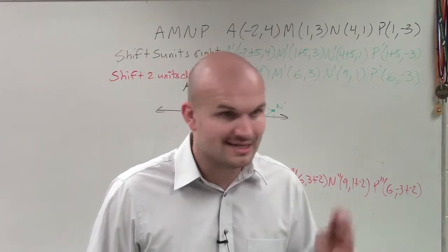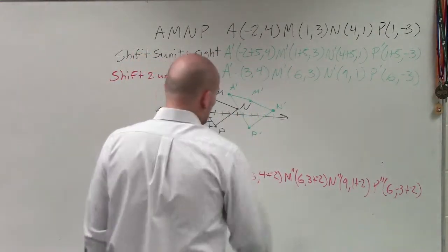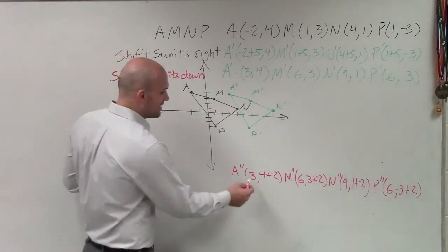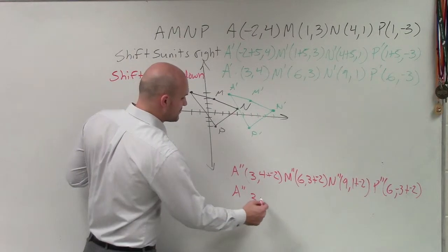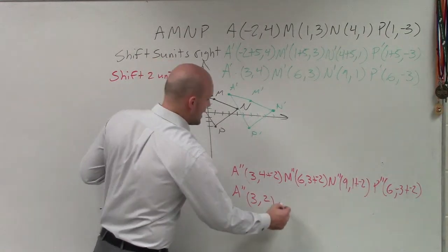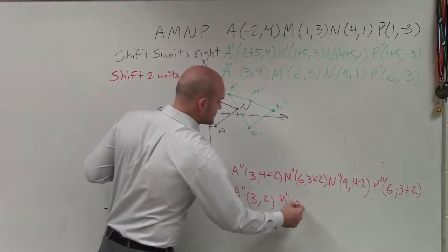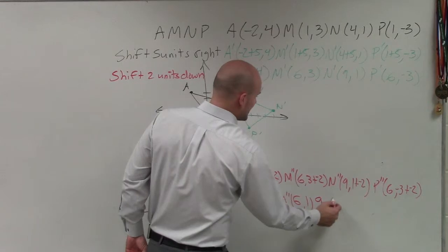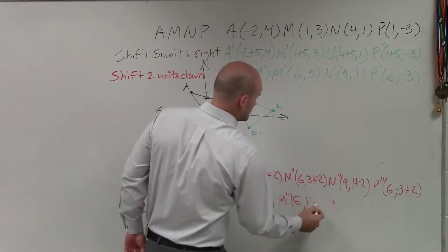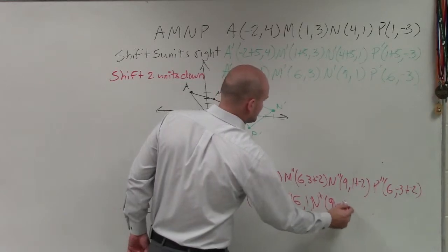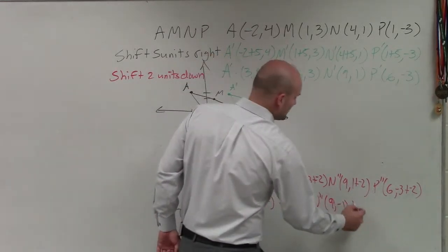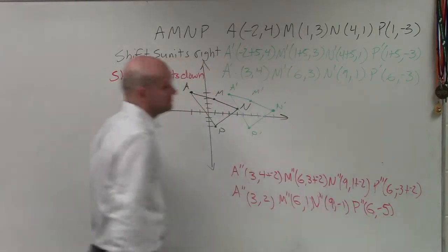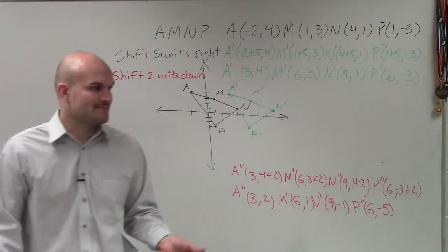M double prime is going to be 6 comma 3 plus a negative 2. N double prime is going to be 9 comma 1 plus negative 2. And P double prime is going to be 6 comma negative 3 plus negative 2. Now, is adding a negative the same as subtracting? Is it? Adding a negative the same as subtracting? Yes, it is. Of course it is. So you guys can see A double prime is going to be 3 comma 2. M double prime is now 6 comma 1. N double prime is going to be 9 comma negative 1. And P double prime is going to be 6 comma negative 5.